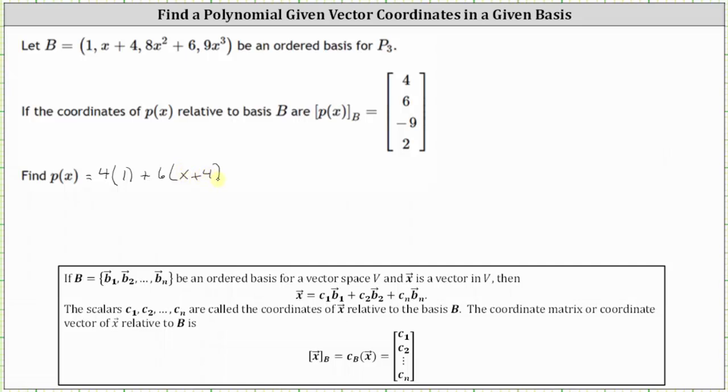plus the third coordinate of negative 9, or just minus 9, times the third polynomial in the basis, which is 8x squared plus 6, plus the fourth coordinate of 2 times the fourth polynomial of the basis, which is 9x cubed.